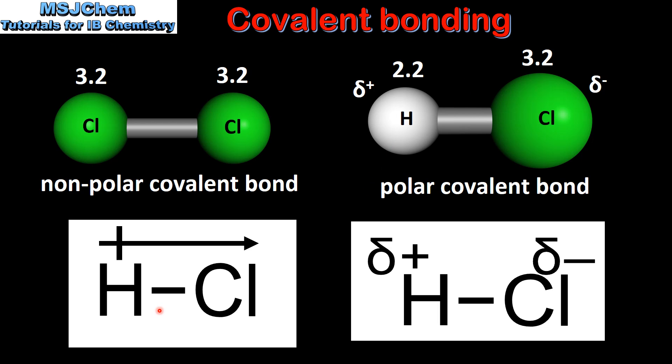Bond polarity can be shown with a vector, as in this example on the left, or with dipoles, as in this example on the right.